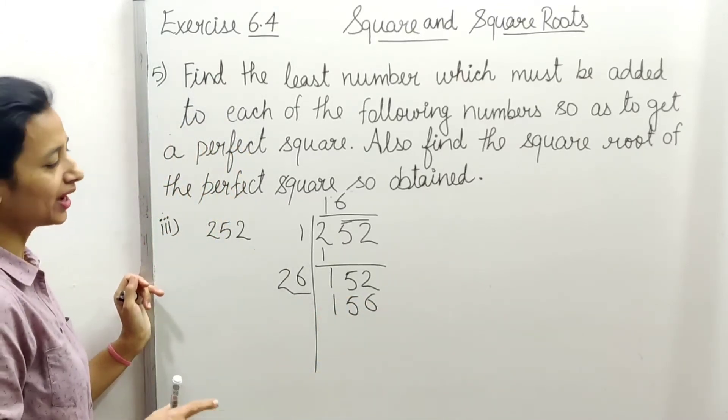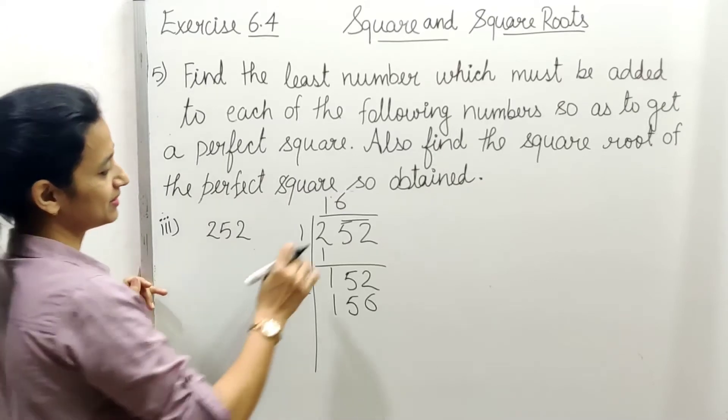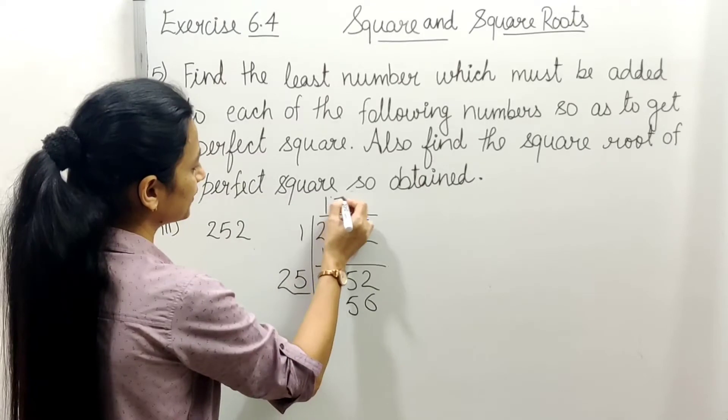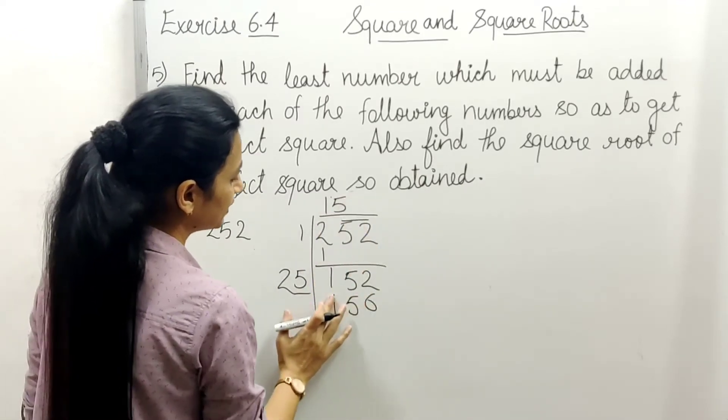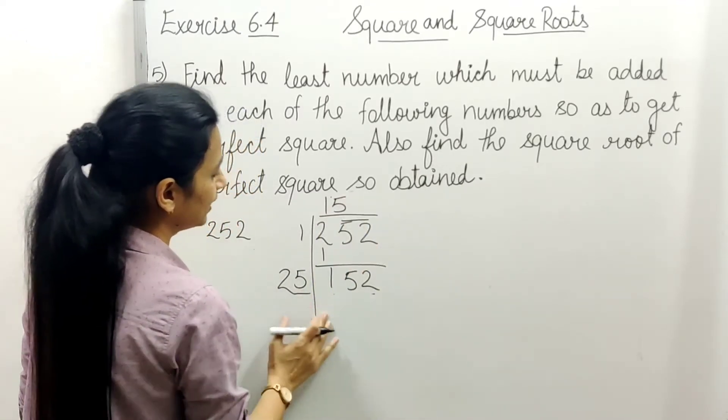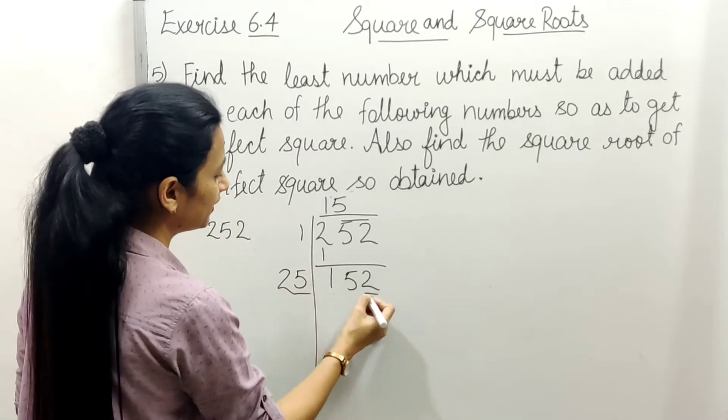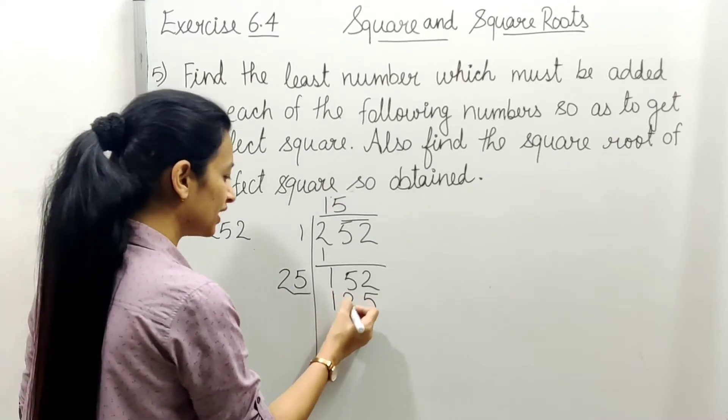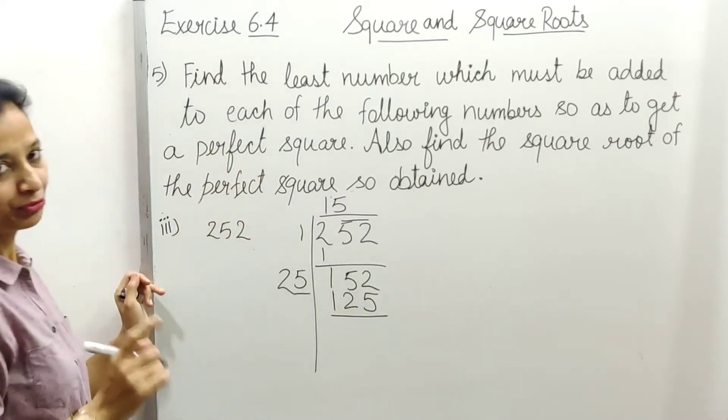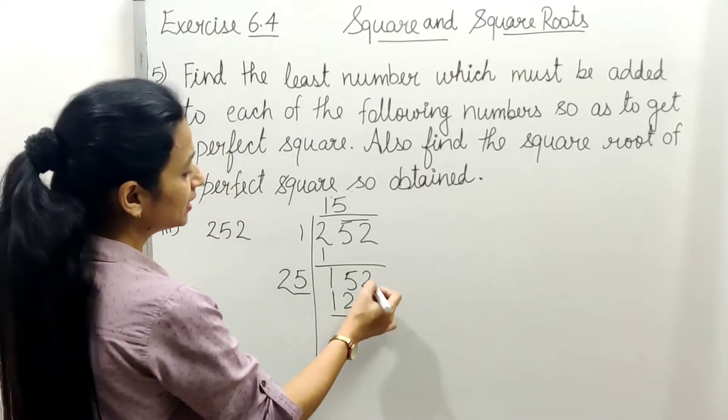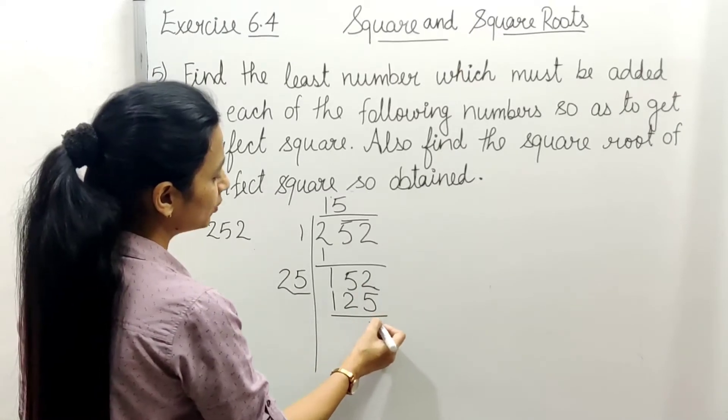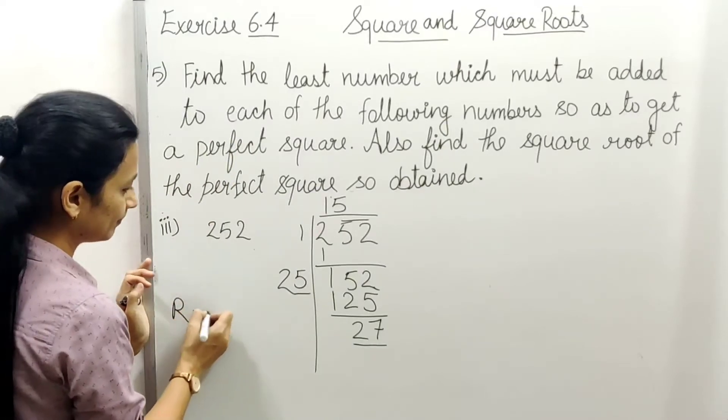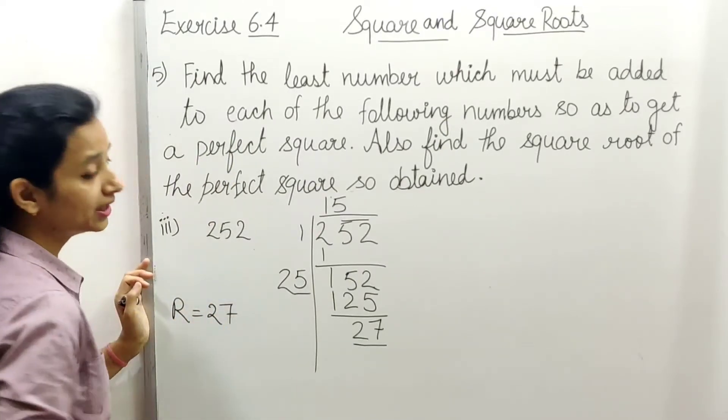So we'll do 6 times: 6, 6×6=36, 6 here, 3 carry over, 6×2=12 plus 3 is 15. This is also too large. So let's do 5 times: 5, and here 5, 5×5=25, 2 carry over, 5×2=10 plus 2 is 12. This is smaller, so 5 times it goes completely. Minus gives 7 and 2. Remainder we got is 27.